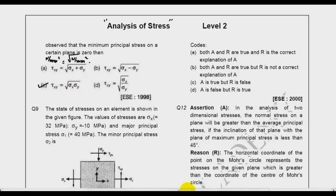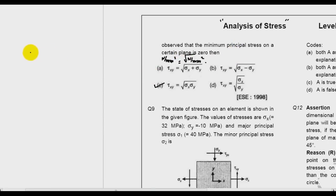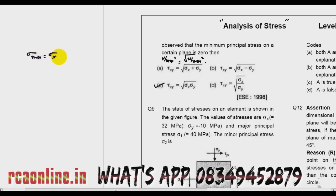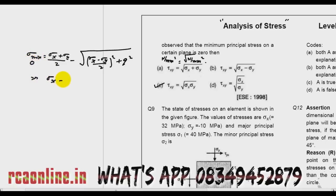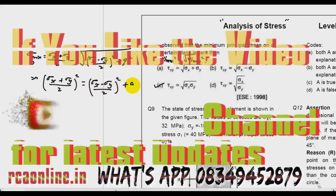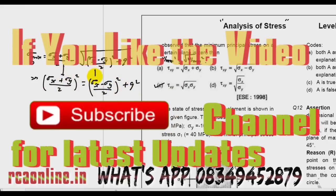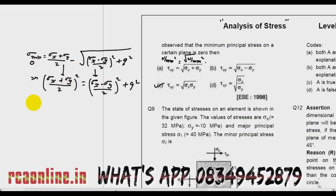Let us come to the solution. The minimum principal stress is: sigma_min = (sigma_x + sigma_y)/2 − sqrt[(sigma_x − sigma_y)/2)² + q²], and this equals 0. Squaring both sides: (sigma_x + sigma_y)/2)² = (sigma_x − sigma_y)/2)² + q². If you solve this, you get q = sqrt(sigma_x · sigma_y), which is answer C.